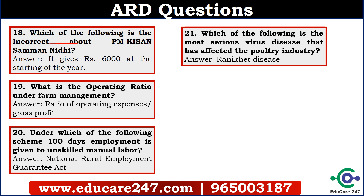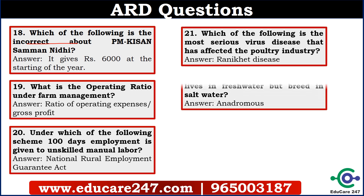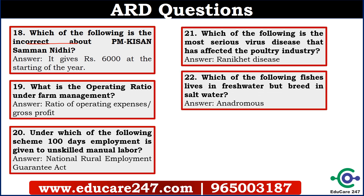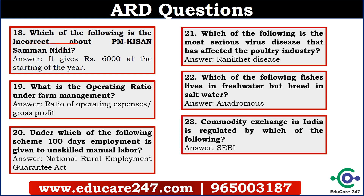The twenty-first question is: which of the following is the most serious virus disease that has affected the poultry industry? The answer is Ranikhet disease. The twenty-second question is: which of the following species lives in fresh water but breeds in salt water? The answer is Anadromous. The twenty-third question is: commodity exchange in India is regulated by which of the following? The answer is SEBI — it was a very simple question.